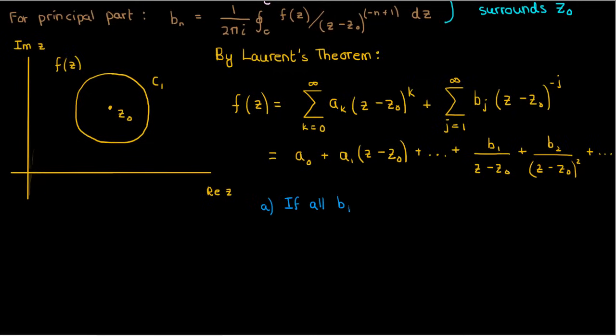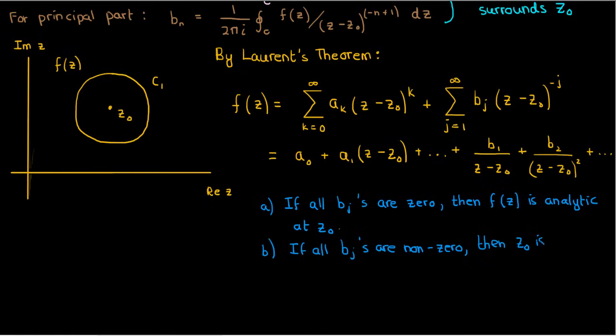So for instance, if my entire principal part or the b series is 0, then f is analytic at z equals z0. In contrast, if all infinite b series coefficients are non-zero, then f is said to have an essential singularity or an essential pole at z0.